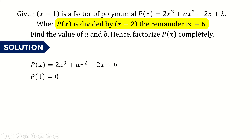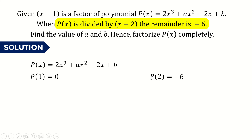The second piece of information is that when p(x) is divided by x minus 2, the remainder is negative 6. Using the remainder theorem, when x equals 2, the remainder equals negative 6. So we have p(1) = 0 and p(2) = -6 as our two conditions.